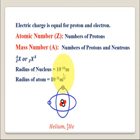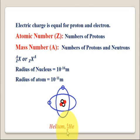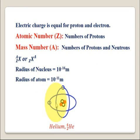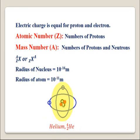The radius of the nucleus is equal to 10 raised to minus 16 meters and the radius of the atom is equal to 10 raised to minus 11 meters. The structure of a typical helium atom is shown, in which there are two protons and two neutrons together forming a nucleus having four nucleons, and there are two electrons orbiting around the nucleus. Helium is symbolically written as He-4 with atomic number 2 and mass number 4.